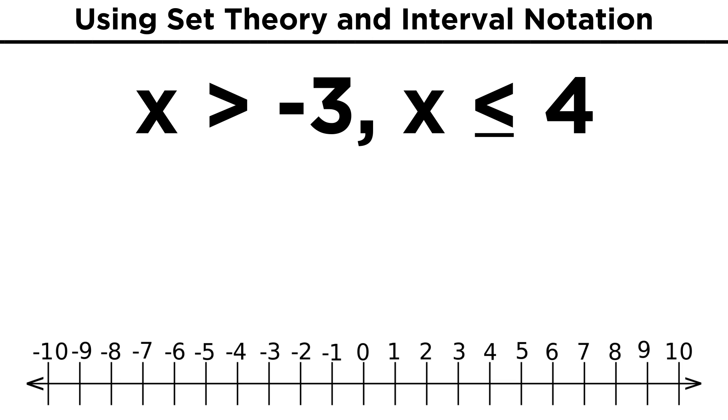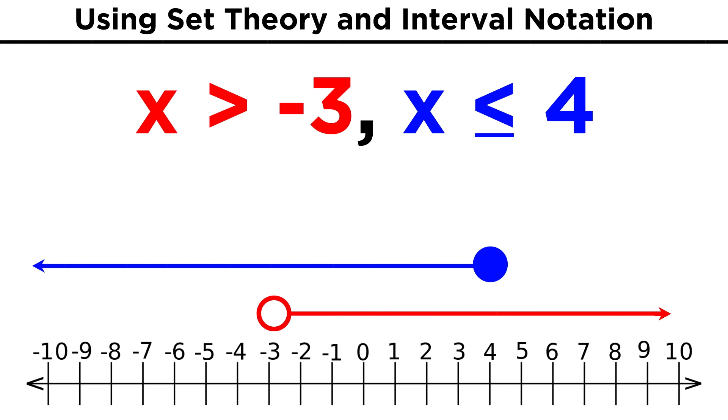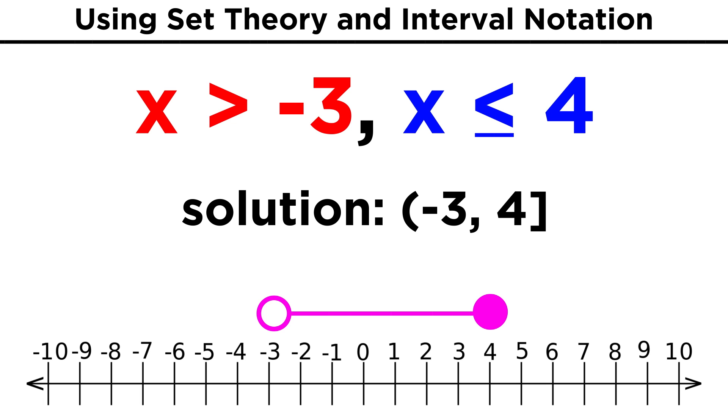We could represent solutions to systems of inequalities this way as well. Say we have X is greater than negative three and X is less than or equal to four. Looking at the number line, anything greater than negative three works for the first one, and anything less than or equal to four works for the other one, but the only values that will be solutions to the system of inequalities will be values that are solutions for both inequalities. That will be this region of overlap here, so the solution to the system will be the interval from negative three exclusive to four inclusive. It is important that we open with a parenthesis and close with a bracket, as that will accurately reflect the boundaries of the solution set.